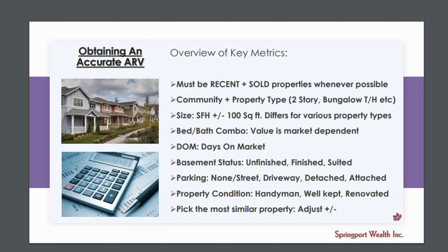You also want to make sure the comps you're getting are within the same community and the same property type. This sometimes gets overlooked, but you want to make sure you're comparing two-story to two-story, bungalow to bungalow, townhouse to townhouse. This especially comes into play between two-story and bungalow, because builders put more value on a bungalow since its footprint means a larger basement, which requires more concrete — we're in Canada and build basements below the frost line.